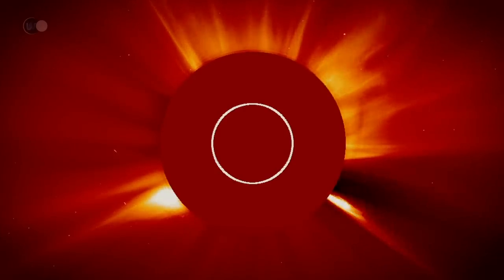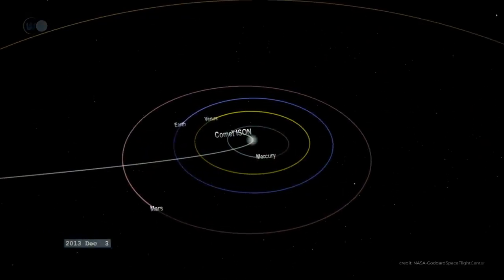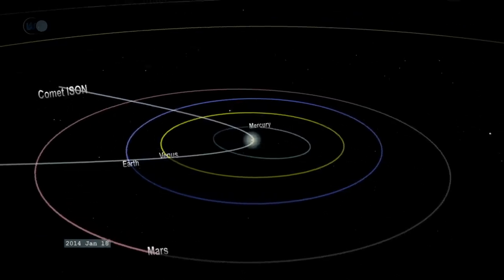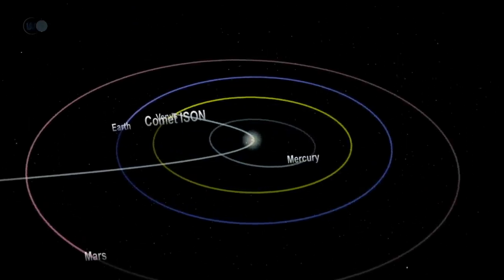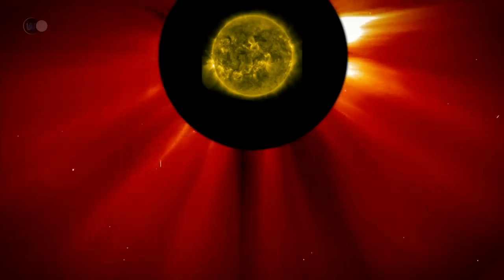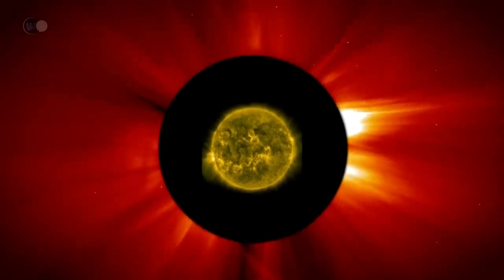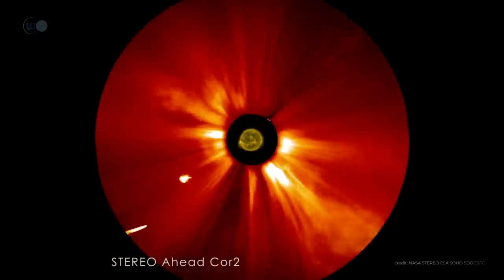Sometimes dubbed the comet of the century, its trajectory brought it to within 1.1 million kilometers, or 600,000 miles of the sun's surface, on November 28, 2013. Its nucleus, estimated to be less than 1 kilometer or 0.6 miles in diameter, could not withstand the star's violent forces. Ison literally disintegrated. However, observations in interplanetary space of dust resulting from this fatal approach should enable the scientific community to unravel some of Ison's dirty secrets.